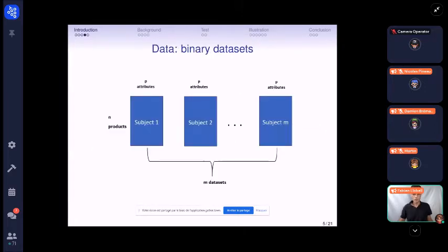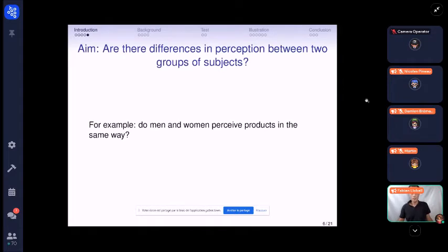And all in all, we have M datasets, as many datasets as subjects, on the same products and the same attributes. So the aim is to answer: are there differences in perception between two groups of subjects, two pre-defined groups of subjects? For example, do men and women perceive the product in the same way or not?